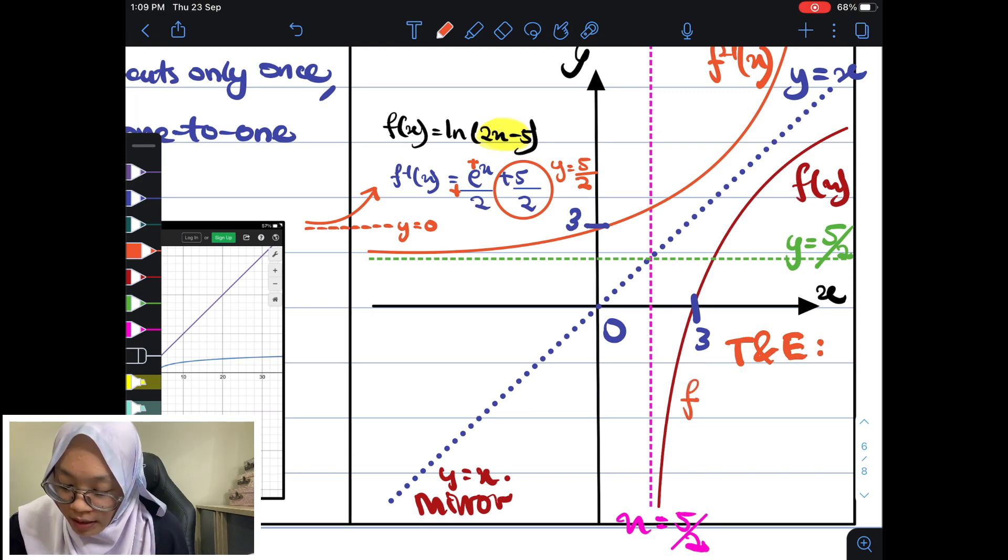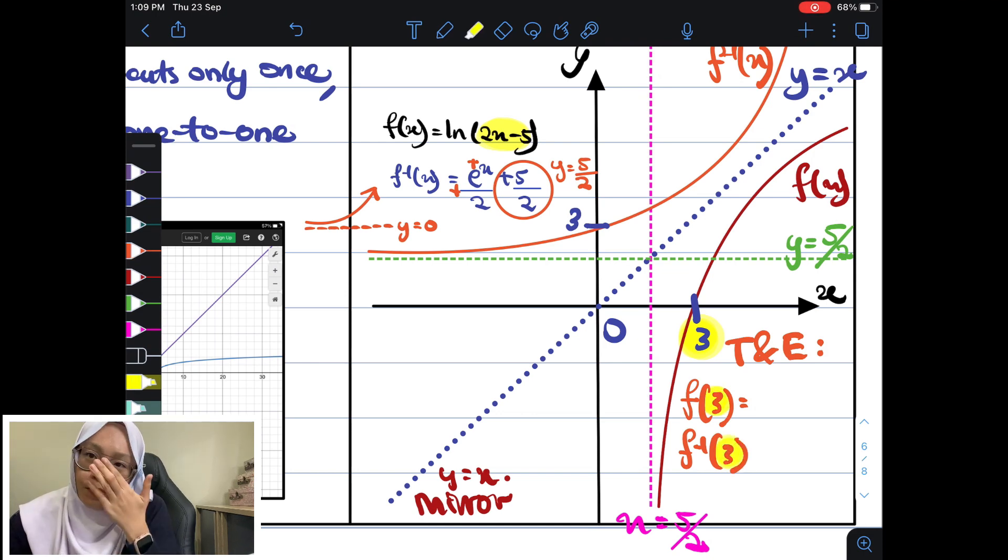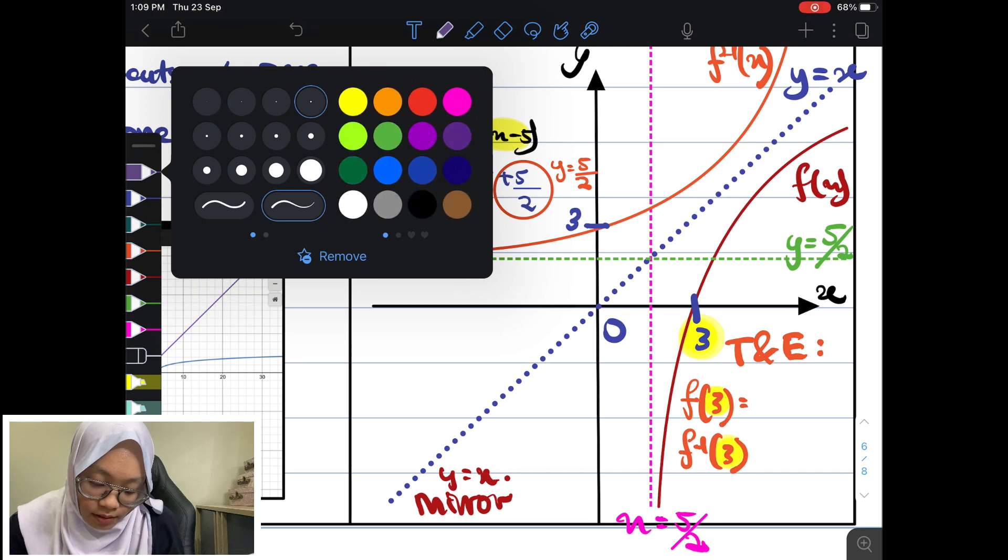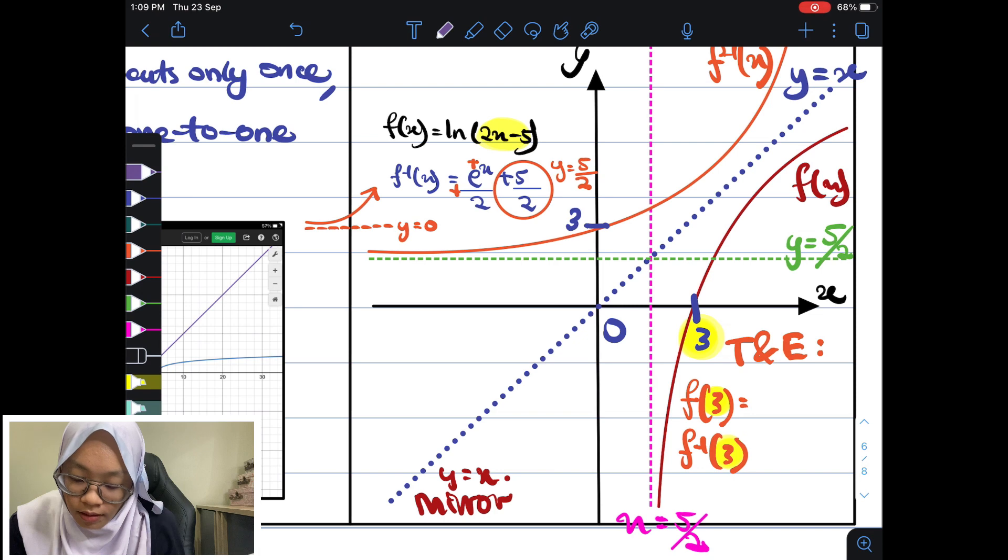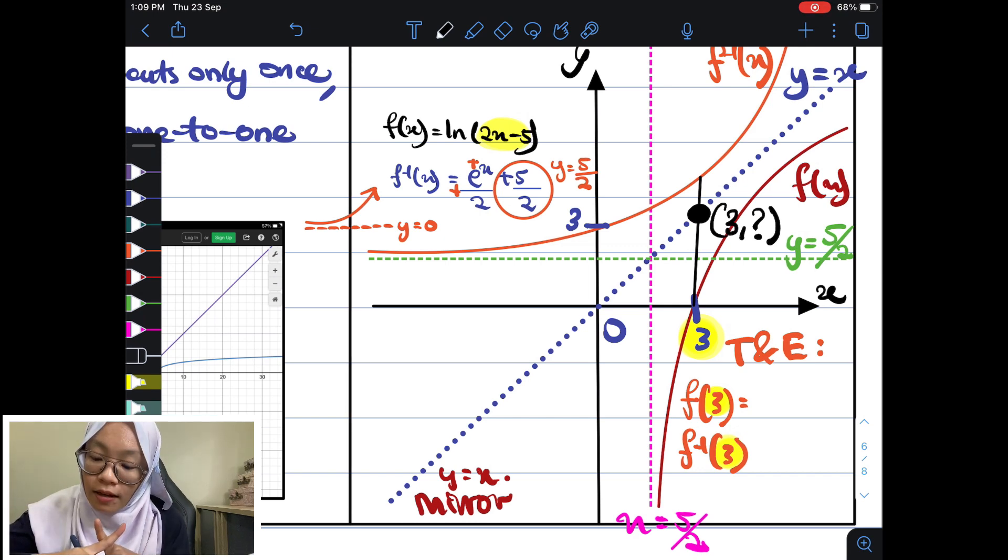So, try and error dekat sini. Masukkan, you pakailah point 3 ni. Masukkan ke dalam f(x) dan juga f inverse. Menggunakan point 3 ni. Sebab, dekat point 3 ni. Kalau dia cross, dia akan cross dekat point 3 ni. Dia mesti sama. Kalau dia cross, intersection point dia mesti sama. And then, kita tinggal cari y coordinate.